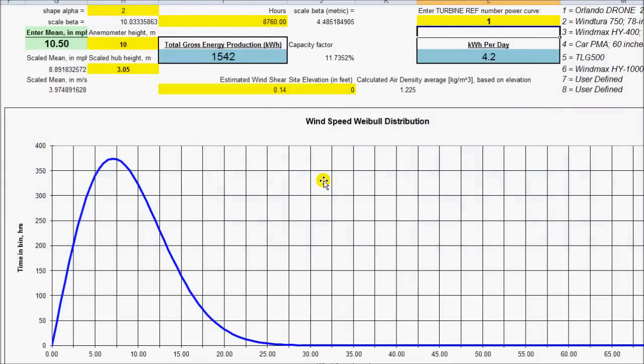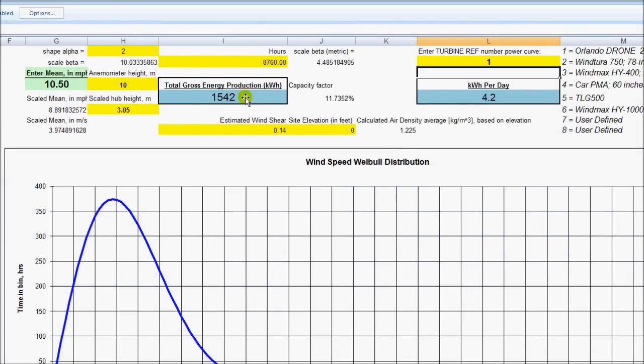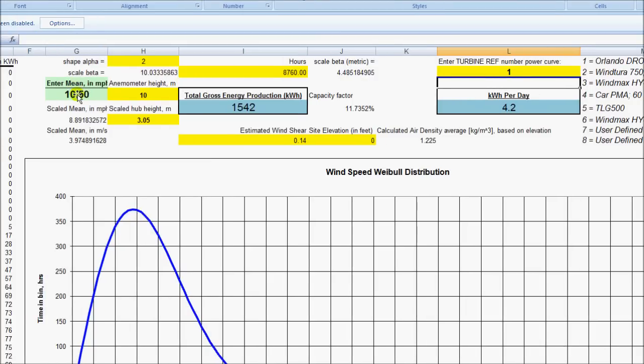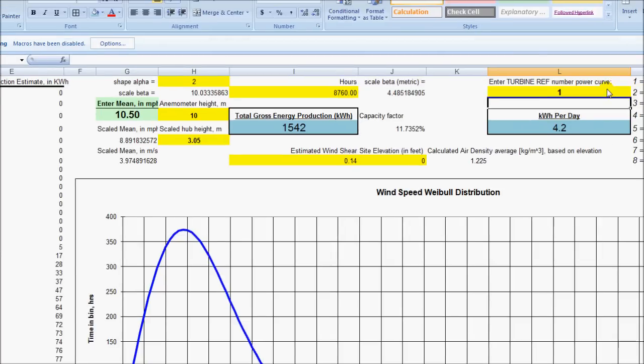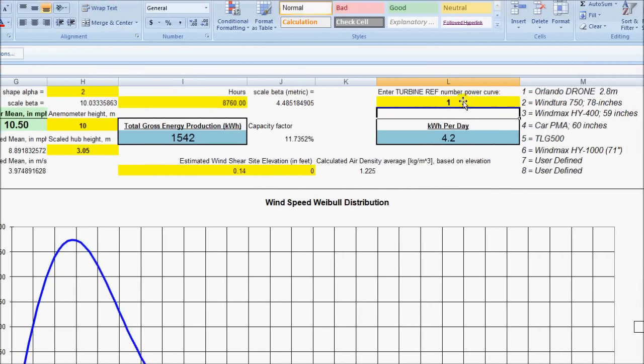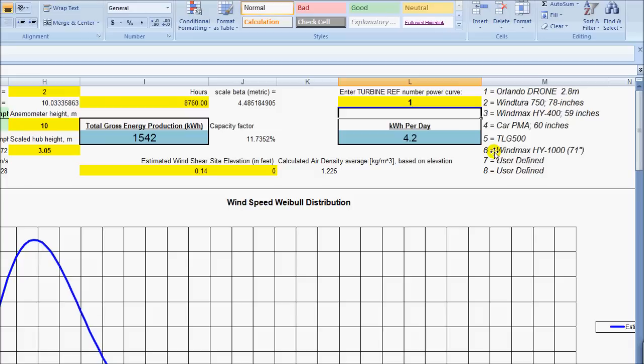All right, on my last video, I showed this method of calculating the kilowatt hours based on entering your average mean wind speed for your area. And then over here, selecting one of several wind turbines that are on the market.